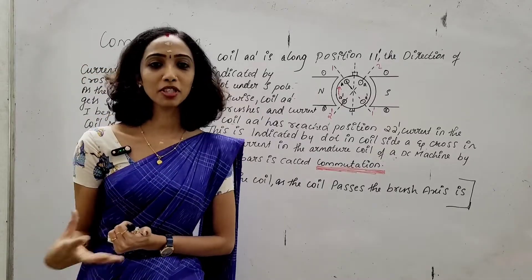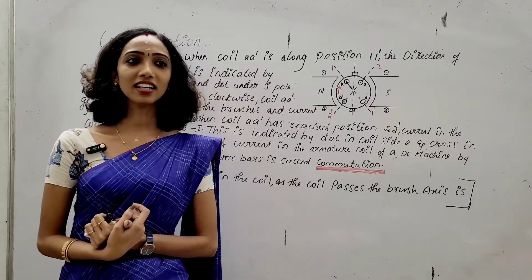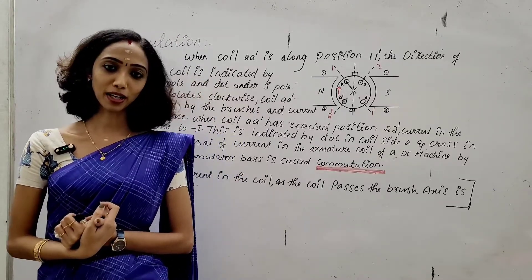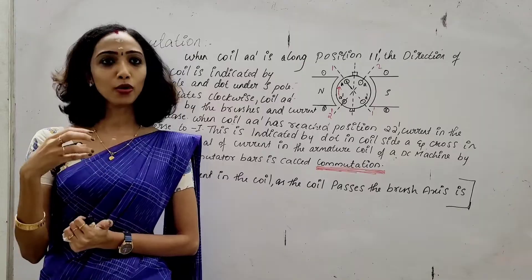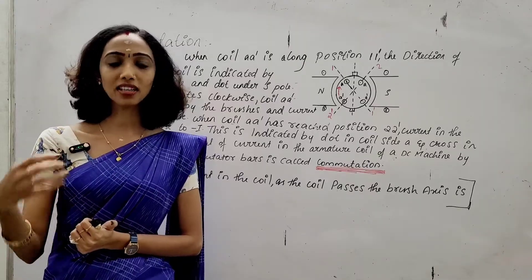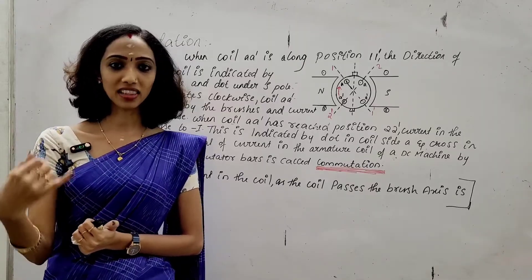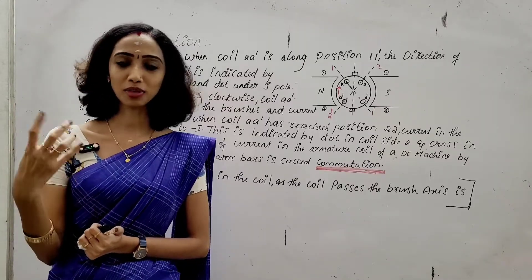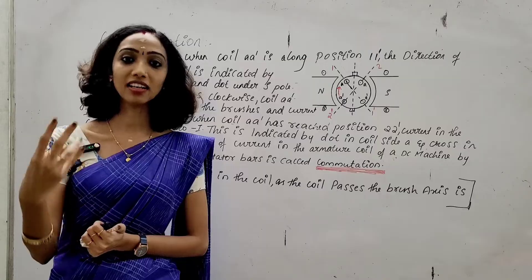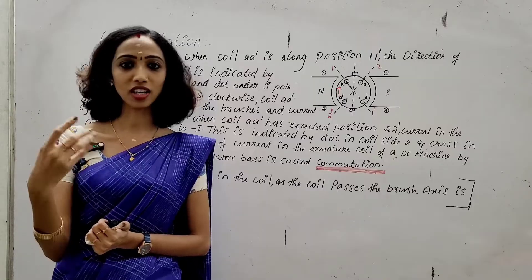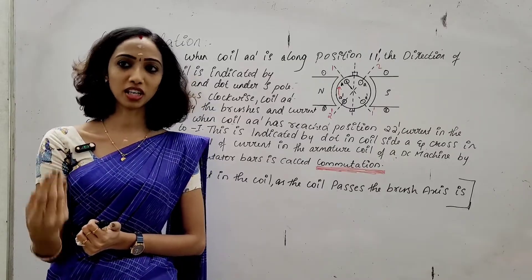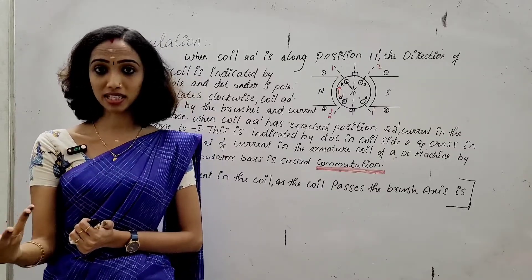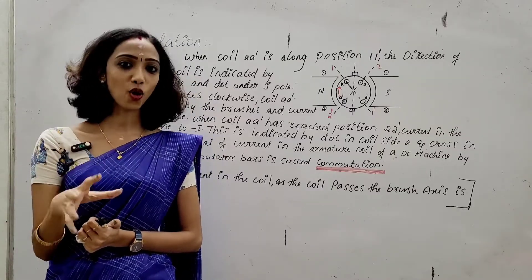Let's see the construction features of a DC machine. The components are: armature, field winding, armature commutator, brush, commutator segments, and yoke.